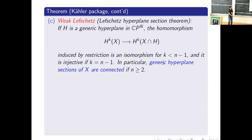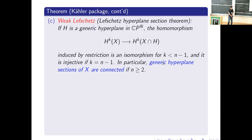Moving to the Lefschetz properties, we have Weak Lefschetz, also called the Lefschetz Hyperplane Theorem in topology and geometry. This says that if I have a generic hyperplane in the ambient projective space, then the restriction homomorphism from the projective variety X to its hyperplane section is an isomorphism up to middle degree — for index less than n minus one — and is injective in degree n minus one.